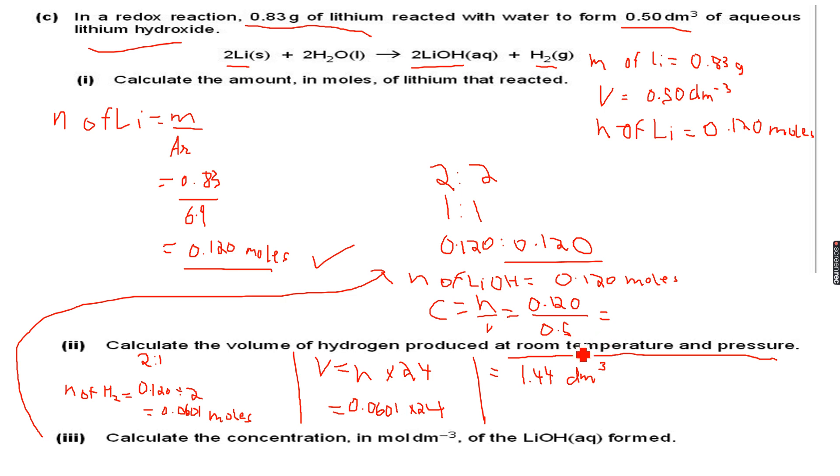As I put it on my calculator, I get 0.241 mol dm⁻³. So this is the concentration of lithium hydroxide formed, 0.241 moles per dm³.